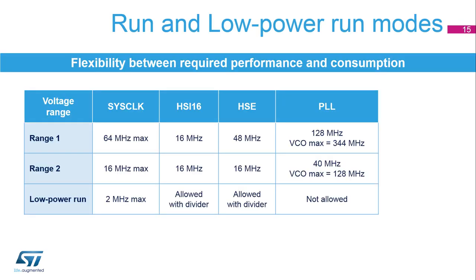The run mode, thanks to voltage scaling and the low-power run modes, offers flexibility between required performance and consumption. In run mode range 1, the system clock is limited to 64 MHz and the internal and external oscillators and the PLL can be used. In run mode range 2, the system clock is limited to 16 MHz and the internal and external oscillators as well as the PLL can be used, but must be limited to 16 MHz. In low-power run mode, the system clock must be limited to 2 MHz.